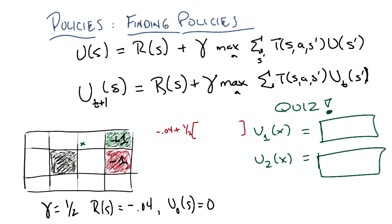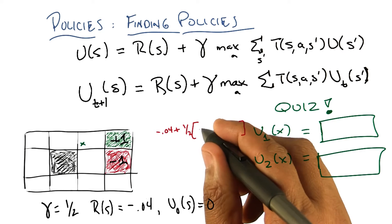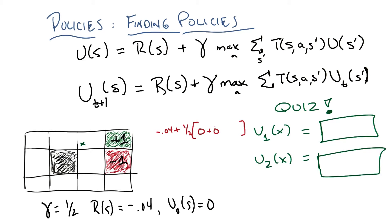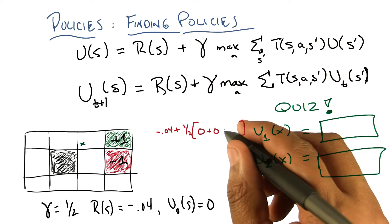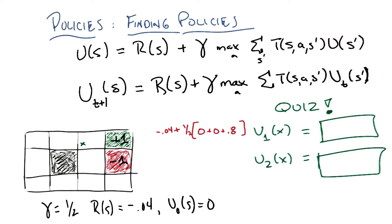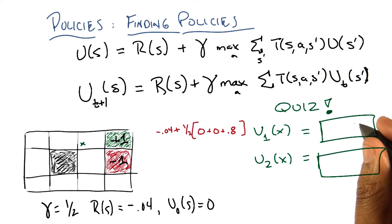So we only have to do the one action, which is to the right. And so, if we go to the right, there's three possible next states we could go in. One is back to x, which has a value of 0. One is to the thing underneath of x, which has a value of 0. And then the last one, with probability 0.8, is to go to the plus 1. Which is 0.8 times plus 1, which is 0.8. Okay, and that is? So 0.8 times a half is 0.4 minus 0.04 is 0.36. Yep, and that is correct.